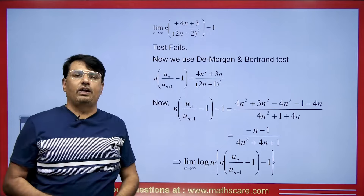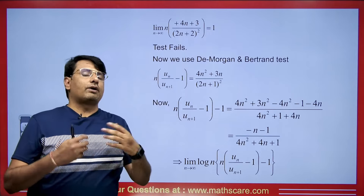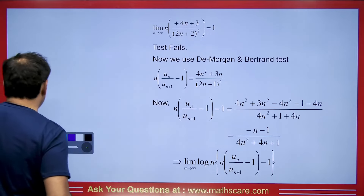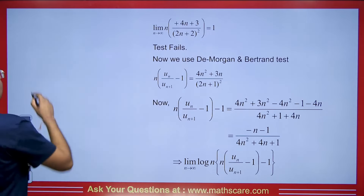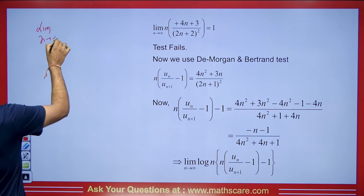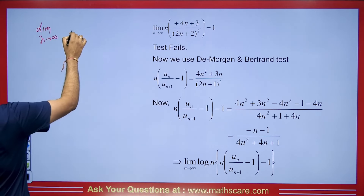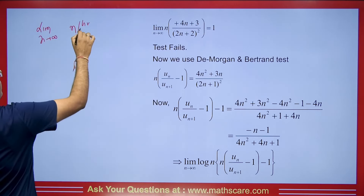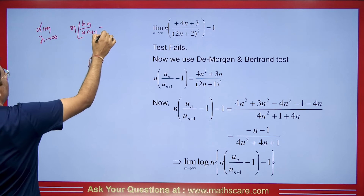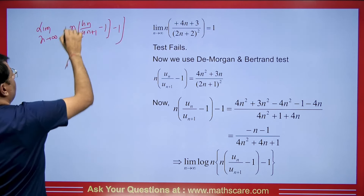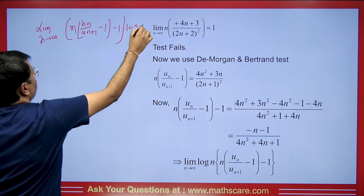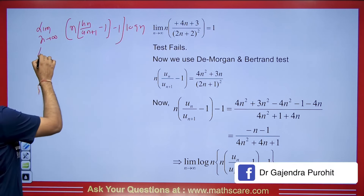Now that the Rabbe test also failed, we use the DeMorgan's test. The DeMorgan's test tells us to evaluate: limit as n tends to infinity of [n(U_N / U_{N+1} − 1) − 1] × log N. We will calculate this value and see what we get.